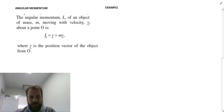All right, so we're looking at angular momentum here, an application of vectors. The angular momentum, L, of an object of mass M moving with velocity V about a point O is this formula, where R is the position vector of the object from O. All right, so this is the angular momentum.